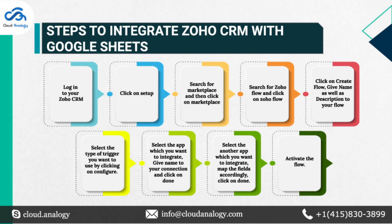Let's now move to the Zoho CRM and Google Sheets integration process. Firstly, login into Zoho CRM, then go to the setup and thereafter we need to search for Marketplace in the search bar. Then we need to search for Zoho Flow in the search apps bar and click on Zoho Flow. After that, click on Create Flow. Give the name and description to your flow. Select the apps to integrate and map the fields as per your choice. Turn on your flow — it will sync data from Zoho CRM to Google Sheets.